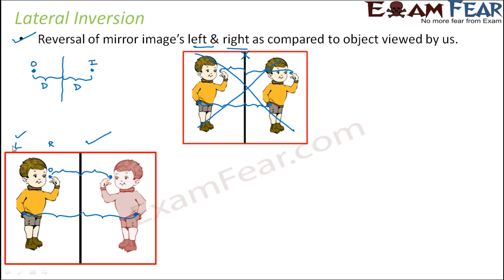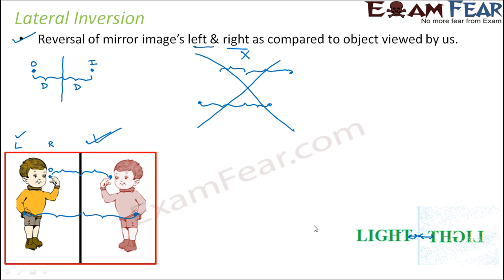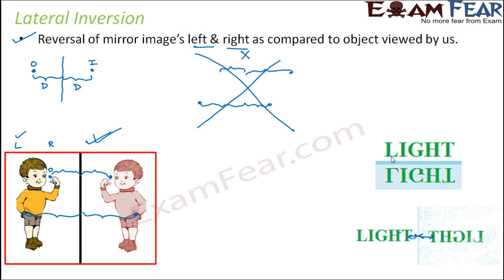The incorrect assumed image and the correct laterally inverted one are now clear. You can see lateral inversion very clearly with something written — for example, the word 'LIGHT.' The mirror image of 'LIGHT' will be reversed. The distance of each letter from the mirror equals the distance of its image, so if you place a mirror like this, the laterally inverted image will look like this, because the distance is always remaining the same.